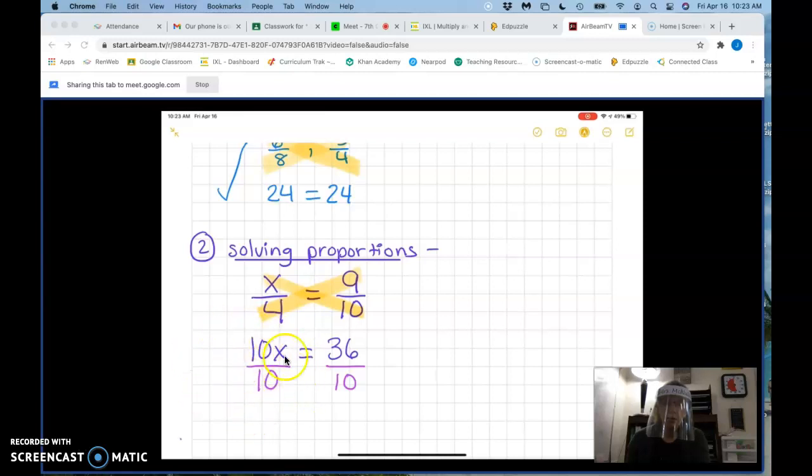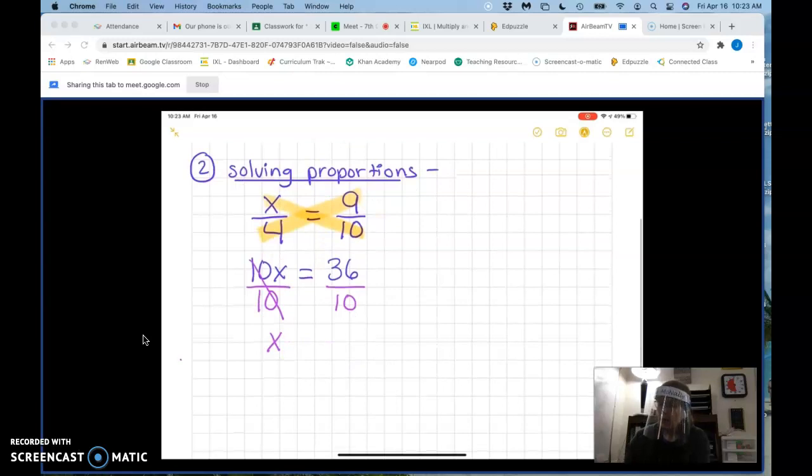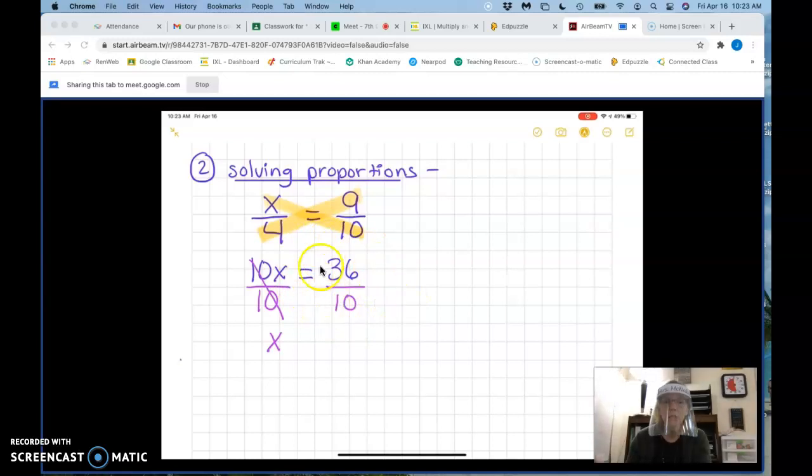What happens to these two 10s over here? They get cancelled out. Okay. And we're just left with X, which is what we wanted. And then on this other side, I have to divide. So what is 36 divided by 10? Use your calculator. 3.6.